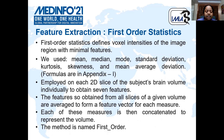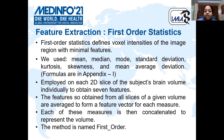The first method is first-order statistics. In first-order statistics, we have used mean, median, mode, skewness, kurtosis, and mean absolute deviation. Formulas can be found in Appendix 1. We have employed these statistics on each of the 2D slices of the subject's brain volume individually to obtain seven features. The features obtained were averaged from all the slices to form a feature vector for each measure. Each of these measures is then concatenated to represent the volume.